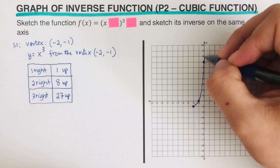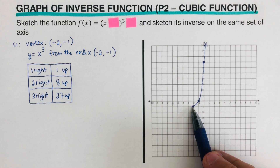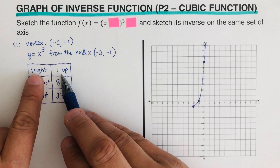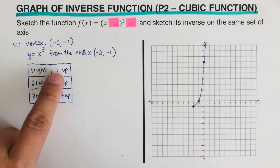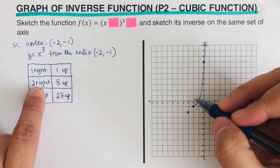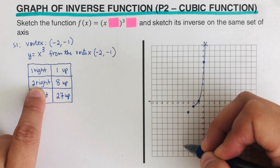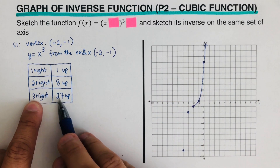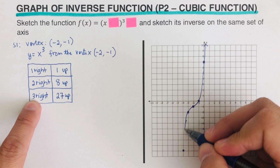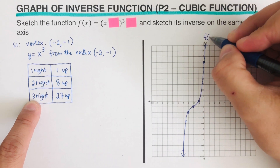Since this is a cubic function, it has another branch on the other side. We flip the direction: instead of 1 right 1 up, we go 1 left 1 down. Then 2 left and 8 down — counting 1, 2, 3, 4, 5, 6, 7, 8. Three left 27 down is way off, so we don't draw that. We connect the dots and label this as f(x).